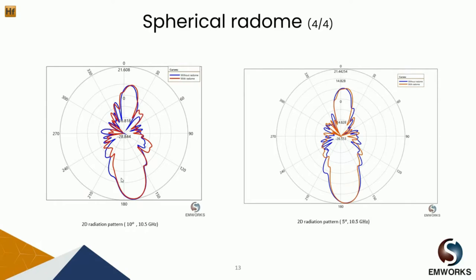Through parametric studies, we wanted to see the effect of tilting the antenna at different angles, namely 5 and 10 degrees. We can see that moving the antenna to an angle of 5 degrees results in a change in terms of the side lobes, but there is no change in terms of the antenna gain. Similarly, for the 10-degree case, we can see that there is no boresight error, but the only change is along the side lobes.